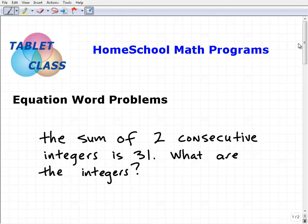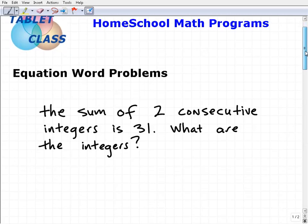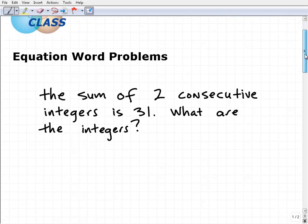Hello, John Zimmerman with Tablet Class Math, and let's go and take a look at this equation word problem. This is something that those of you in pre-algebra and algebra 1 should be able to handle. Before I get into it, you might want to pause the video and see if you can solve it. The problem is: the sum of two consecutive integers is 31. What are the integers?